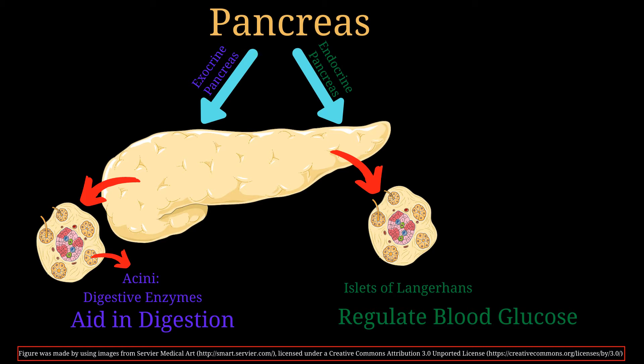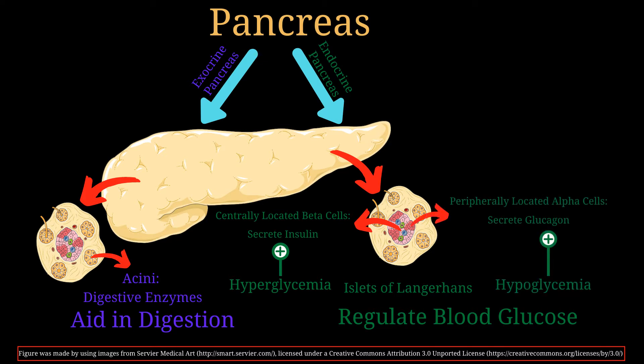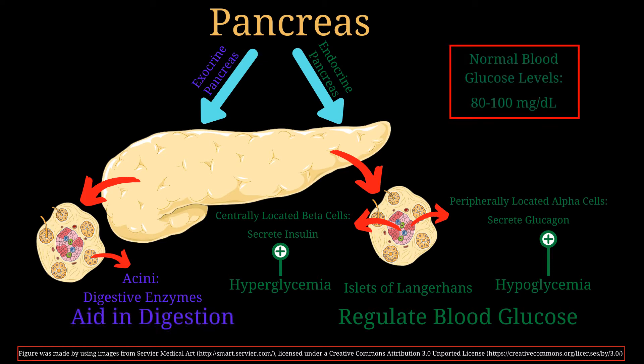The endocrine portion of the pancreas is made up of clusters of cells called the islets of Langerhans. The central part contains the beta cells, which secrete insulin in response to high blood glucose levels. Insulin functions to lower high blood glucose by storing it for later use. The peripheral part contains the alpha cells, which secrete glucagon in response to low blood glucose levels. Glucagon functions to increase blood glucose levels and is typically released during fasting or starvation. Normal blood glucose levels are tightly monitored between 80 to 100 milligrams per deciliter.